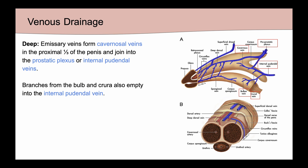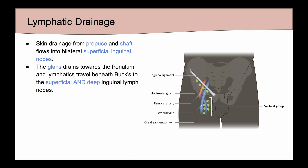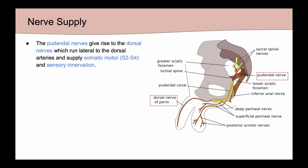Emissary veins form cavernosal veins in the proximal one-third of the penis and join into either the prostatic plexus or internal pudendal veins. Branches from the bulb and crura also empty into the internal pudendal vein. For lymphatic drainage, skin drainage from the prepuce and shaft flows into the bilateral superficial inguinal nodes, while the glans drains toward the frenulum and beneath Buck's fascia to both the superficial and deep inguinal lymph nodes. In those who are circumcised, the skin distal to the circumcision scar drains into the glans.